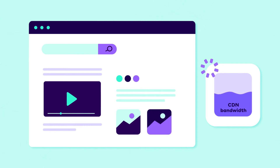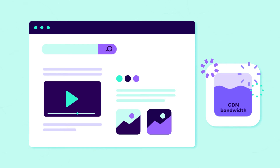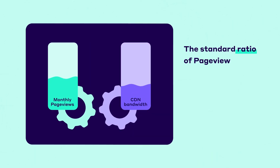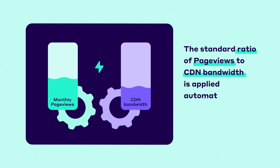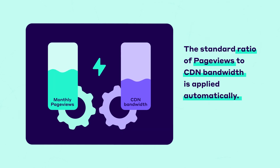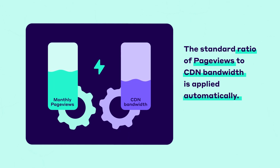larger pages with more resources, like images, fonts, CSS, and JavaScript, generate more CDN usage than leaner pages. You don't need to calculate this metric for your websites beforehand. We know the standard ratio of page views to CDN bandwidth and apply it automatically. That's why we only ask for their combined monthly page views.